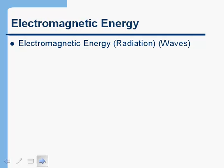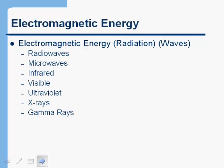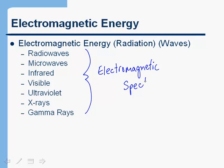What do we mean by electromagnetic energy? Before we get into exactly what it is, let's talk about the different types. Electromagnetic radiation comes in different types: radio waves, microwaves, infrared, visible, ultraviolet, X-rays — which of course is what we care about the most — and gamma rays. Collectively, these different types are referred to as the electromagnetic spectrum.